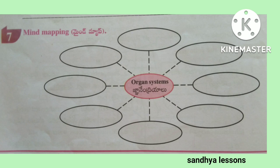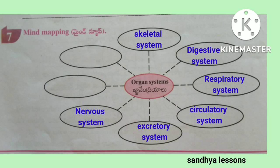Seventh, mind mapping — this is a mind map about organ systems: skeletal system, digestive system, respiratory system, circulatory system, excretory system, nervous system.